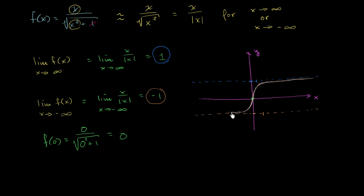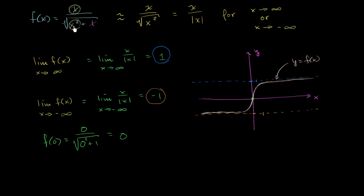We get closer and closer to this lower asymptote as x approaches negative infinity. That right there is y equals f of x. You can verify this with a calculator or graphing tool. The key is just to identify which terms dominate as x approaches positive or negative infinity, then determine what the function approaches — the horizontal asymptote in the positive direction is 1, and in the negative direction is negative 1.